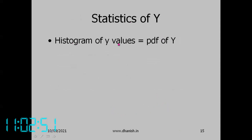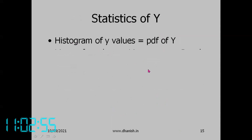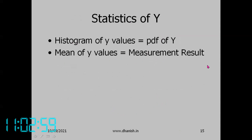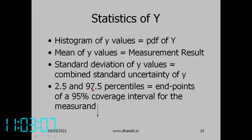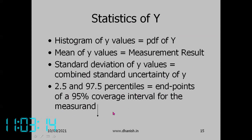The histogram of Y values is the PDF of Y. The mean of Y values is the measurement result. The standard deviation of Y values is the combined standard uncertainty of Y. The 2.5th and 97.5th percentiles are the endpoints of a 95% coverage interval. We have propagated the distributions through the function; input variables may have different distributions and we get a distribution of Y.